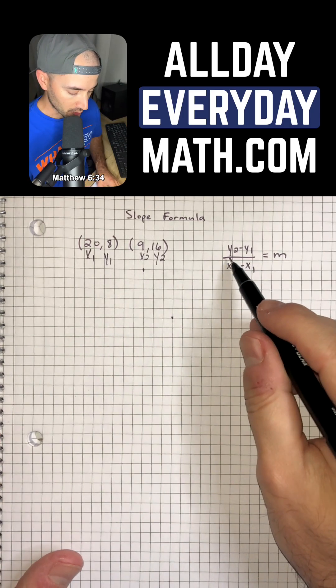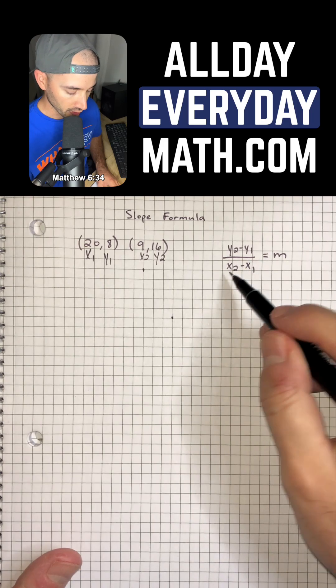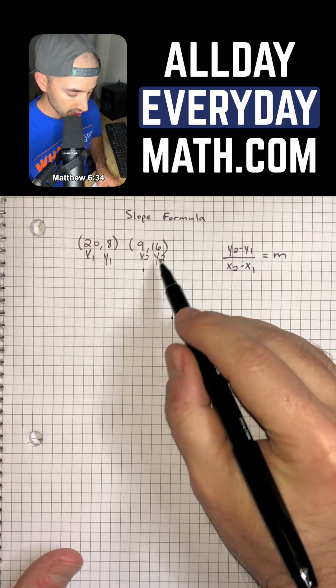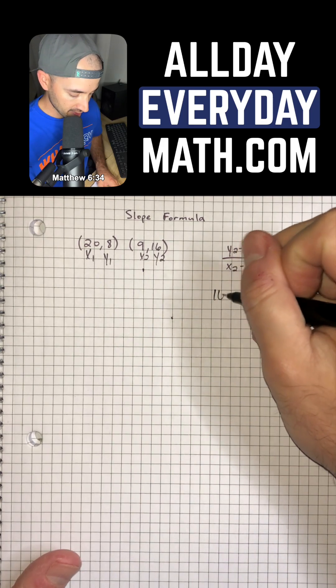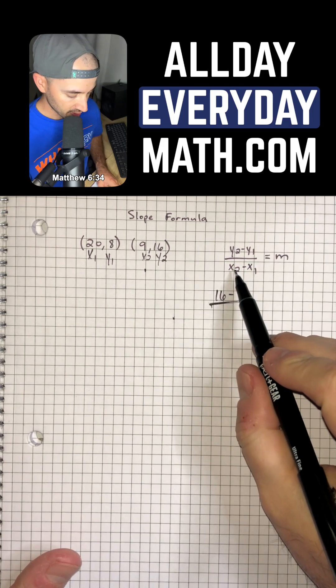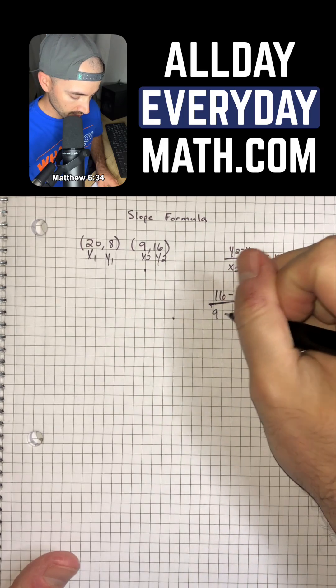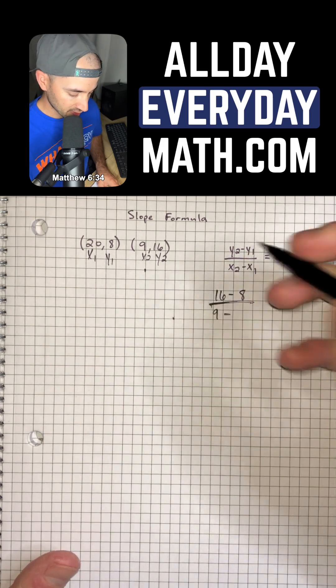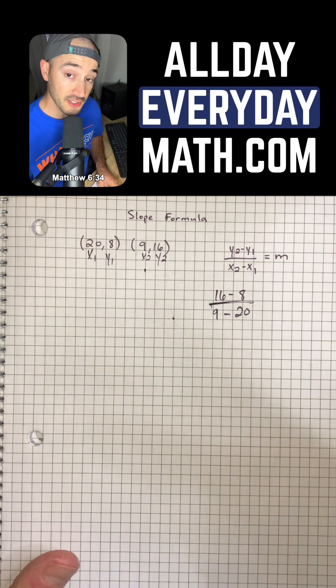So our slope formula is y2 minus y1 over x2 minus x1. So that's going to be 16 minus y1, which is 8, over x2, which is 9, minus x1, which is 20. And so now we just do the math.